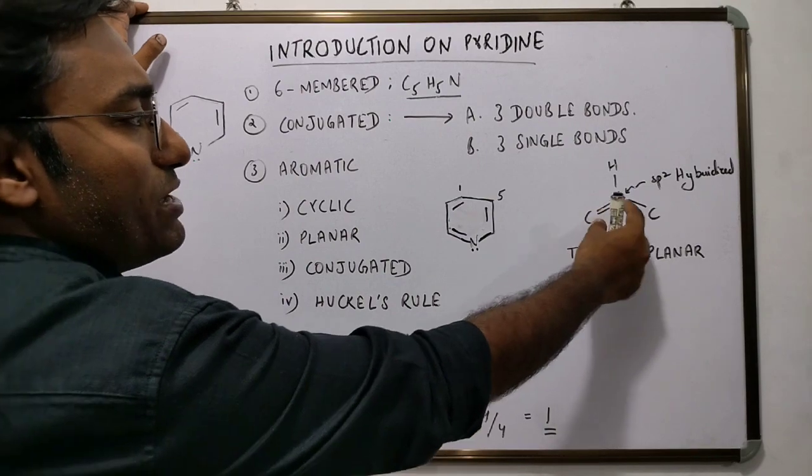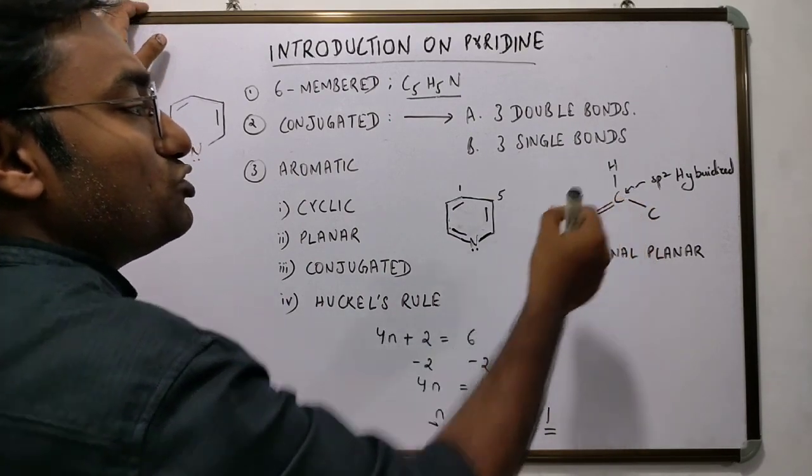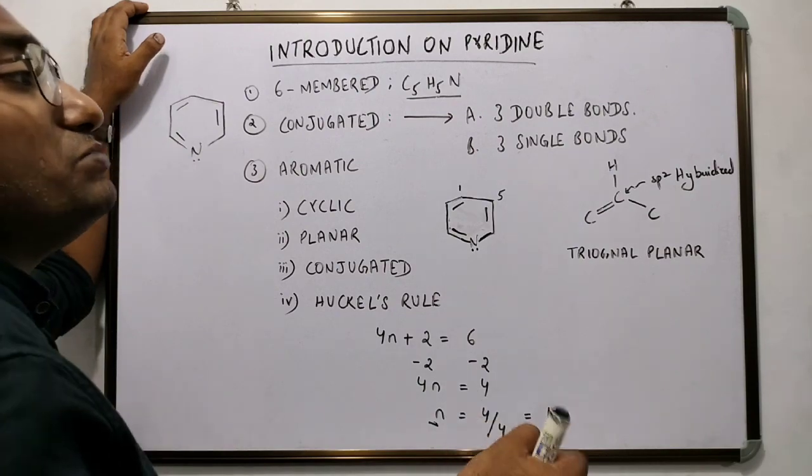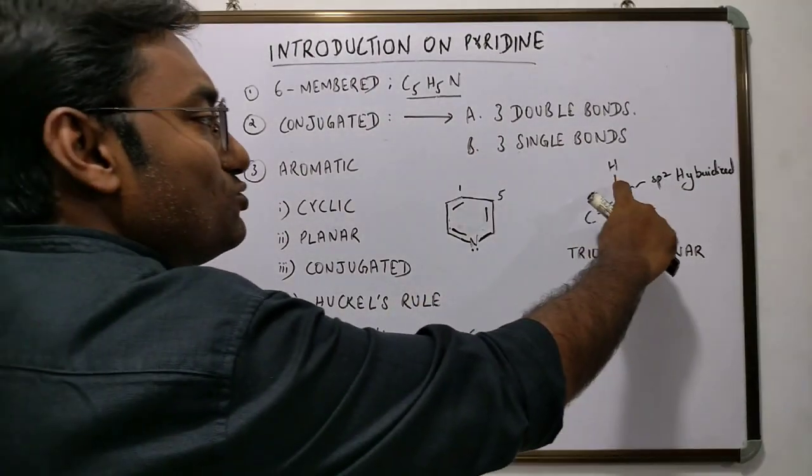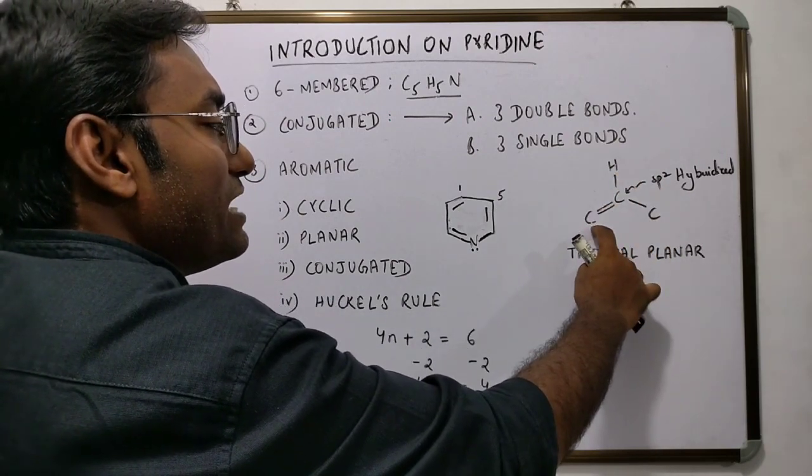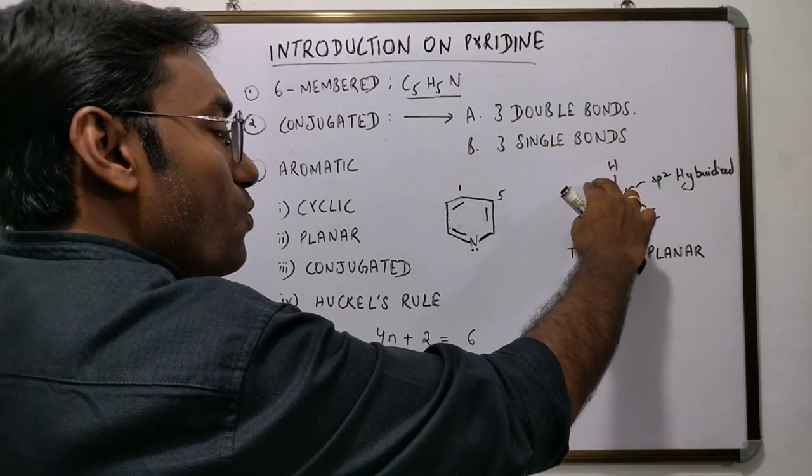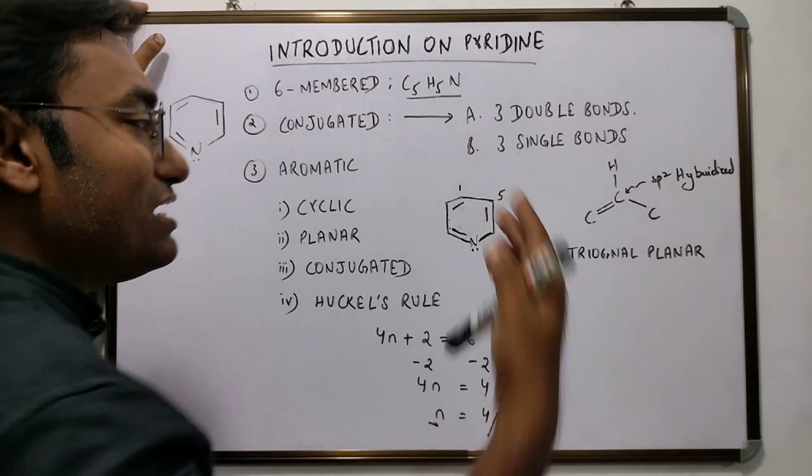For a double bond to appear between two carbon atoms, the two carbon atoms should undergo sp2 hybridization, and there should be an unhybridized p orbital in each of the carbon atoms, such that they overlap and form the pi bond or the double bond.